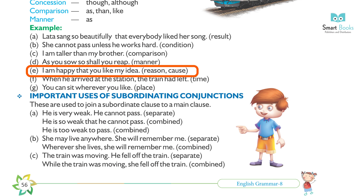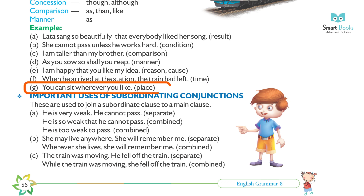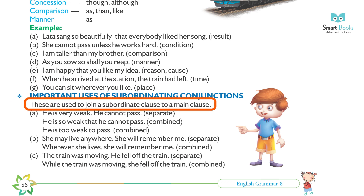Examples of subordinating conjunctions: reason/cause — (f) When I arrived at the station, the train had left. Time — (j) You can argue. Place — you can sit wherever you like. Important uses of subordinating conjunctions: these are used to join a subordinate clause to a main clause.